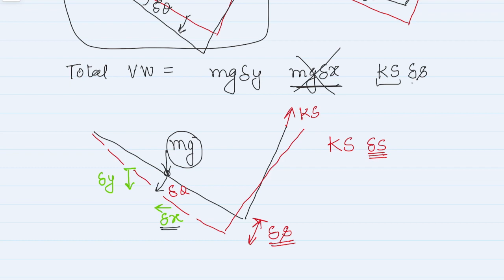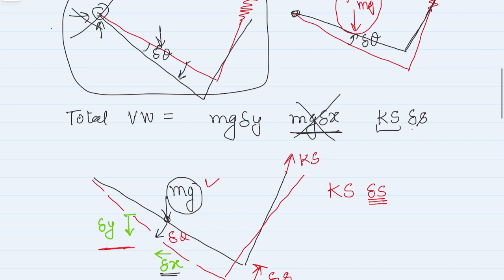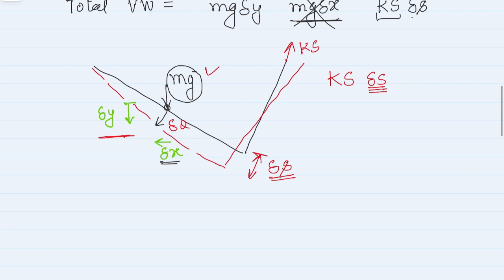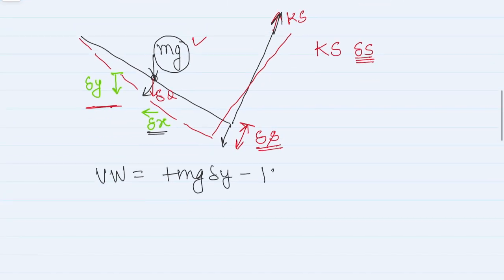We must assign signs to the virtual work terms. Since mg acts downward and the virtual displacement delta y is also downward (rod rotating clockwise), the work done by mg×δy is positive. The spring force acts upward, opposing the downward virtual displacement of the rod, so it contributes negative work. The total virtual work equation is: mg×δy − K×s×δs = 0.